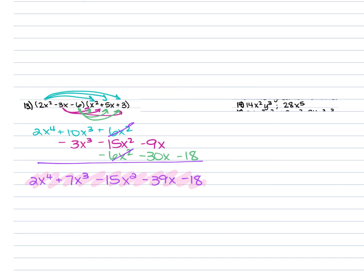For problems 14 and 15, we're finding the greatest common factor. For number 14, we have 14x²y³ and 28x⁵. The factors of 14 are 1, 14, 2, 7; factors of 28 include 1, 2, 4, 7, 14, 28. The greatest common factor of the coefficients is 14. Both terms have x, and the smallest power is x², so include x². Only one term has y, so exclude y. The GCF is 14x².